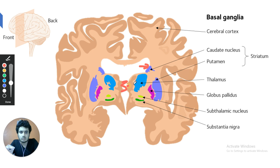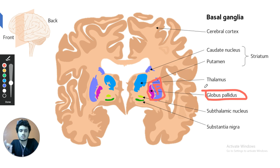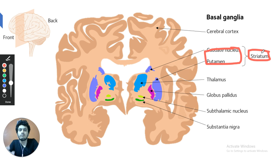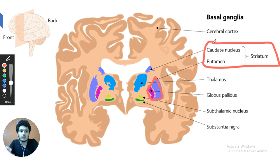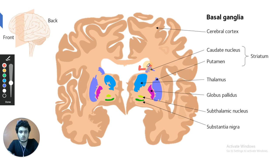Lateral to the caudate nucleus is the lentiform nucleus, with globus pallidus present medially and putamen present laterally. Together the caudate and putamen are functionally related and known as the striatum. The lentiform nucleus with globus pallidus and putamen are related structurally, but caudate nucleus and putamen are functionally related and called the striatum.